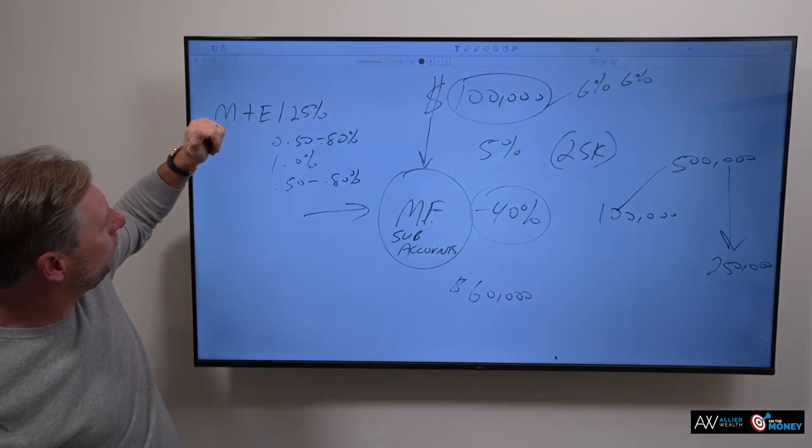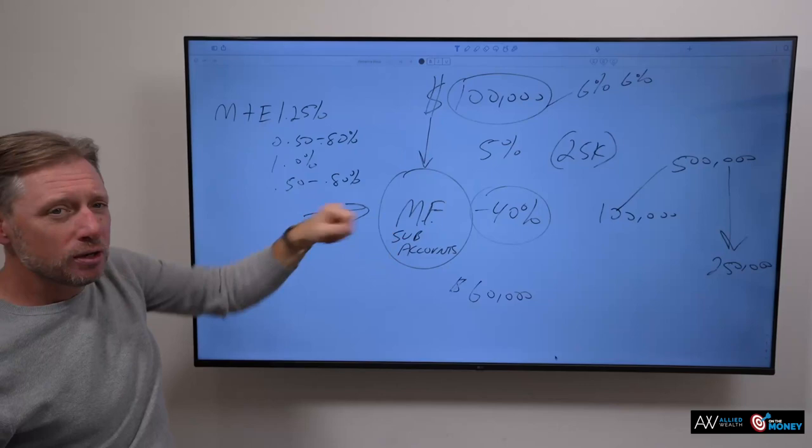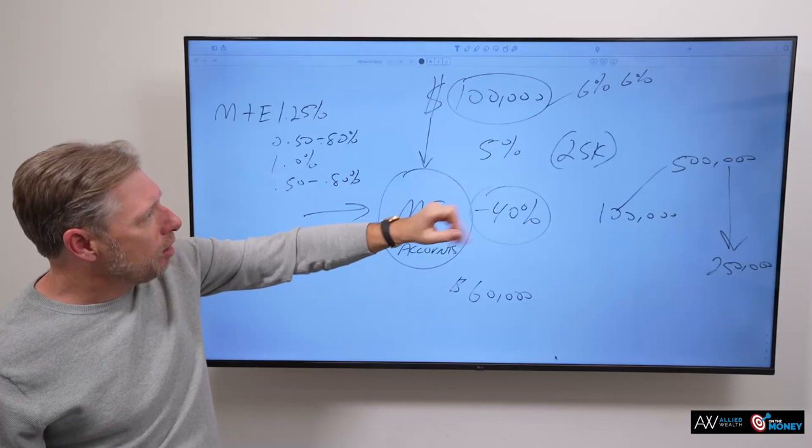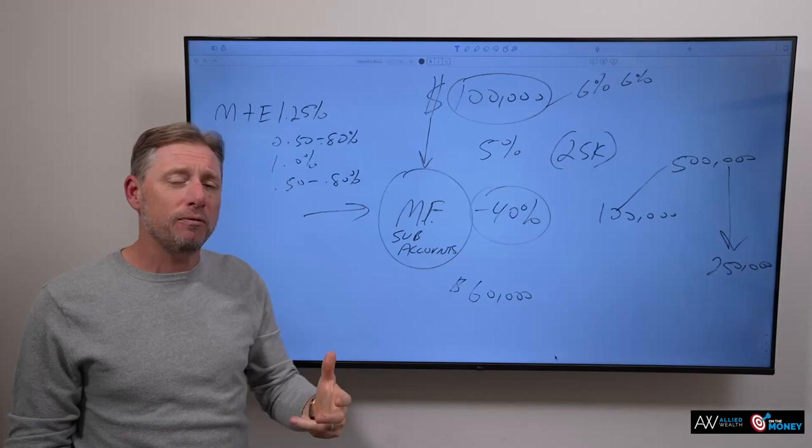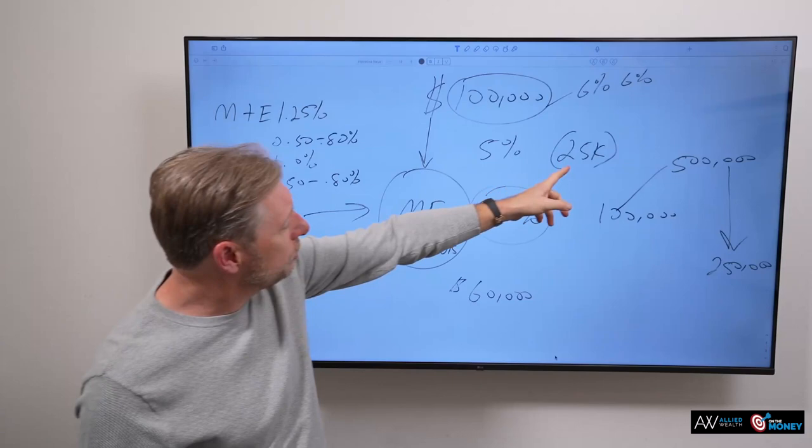We're at 1.25 plus 0.5 for the death benefit rider. That's 1.75. Then we've got the additional 1% for the mutual fund sub-accounts. Now, we're at 2.75. And if we add the guaranteed minimum withdrawal benefit rider, now we're at 3.25%. So, we're already at 3.25%, folks. A couple of things that are important to understand.